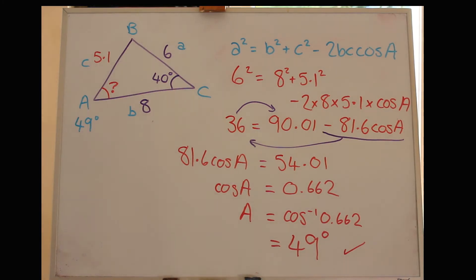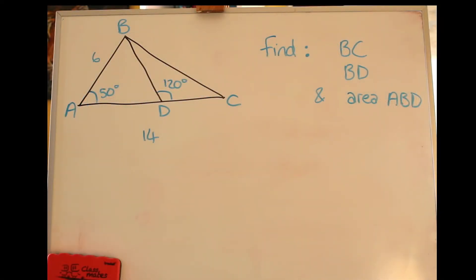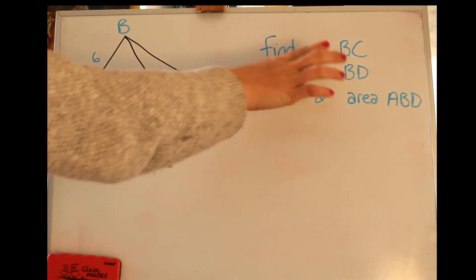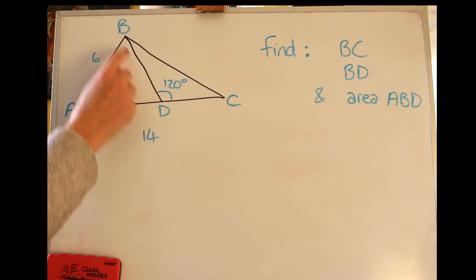Great, I hope that's making sense. Let's look at a couple more questions to practice. OK, our next question. I've drawn out a diagram and the question is to find BC, so this length here, BD which is this length and the area of this triangle ABD. Have a go if you'd like, otherwise stick with me.